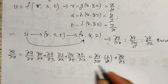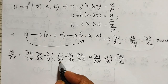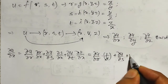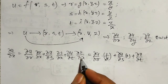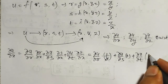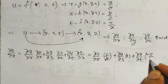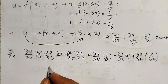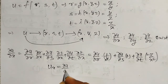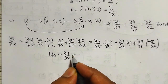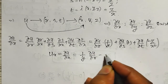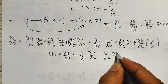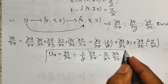Plus dou u by dou s into dou s by dou x. With respect to x, no x term is there, so it is zero. Plus dou u by dou t into dou t by dou x. T with respect to x: z is constant and the differential of 1/x is minus 1/x squared, therefore it is minus z/x squared. Simplified form: dou u by dou x equals 1/y times dou u by dou r, minus z/x squared times dou u by dou t. Call this equation number 1.